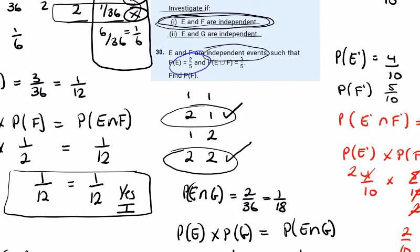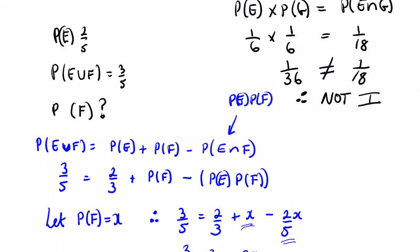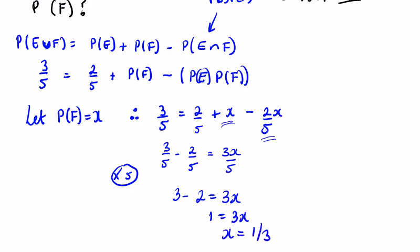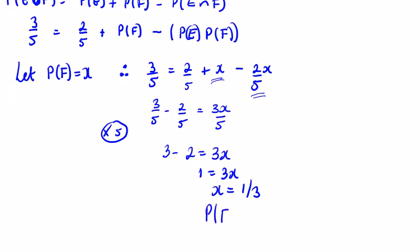Checking the working — I had mistakenly written 2/3 instead of 2/5 earlier, but correcting that: multiplying through by 5 gives 3 − 2 = 3x, so 1 = 3x, meaning x = 1/3. We let P(F) = x, so the probability of F is 1/3. Be careful when transcribing from one line to the next — an error like that should be spotted when the answer doesn't work out.